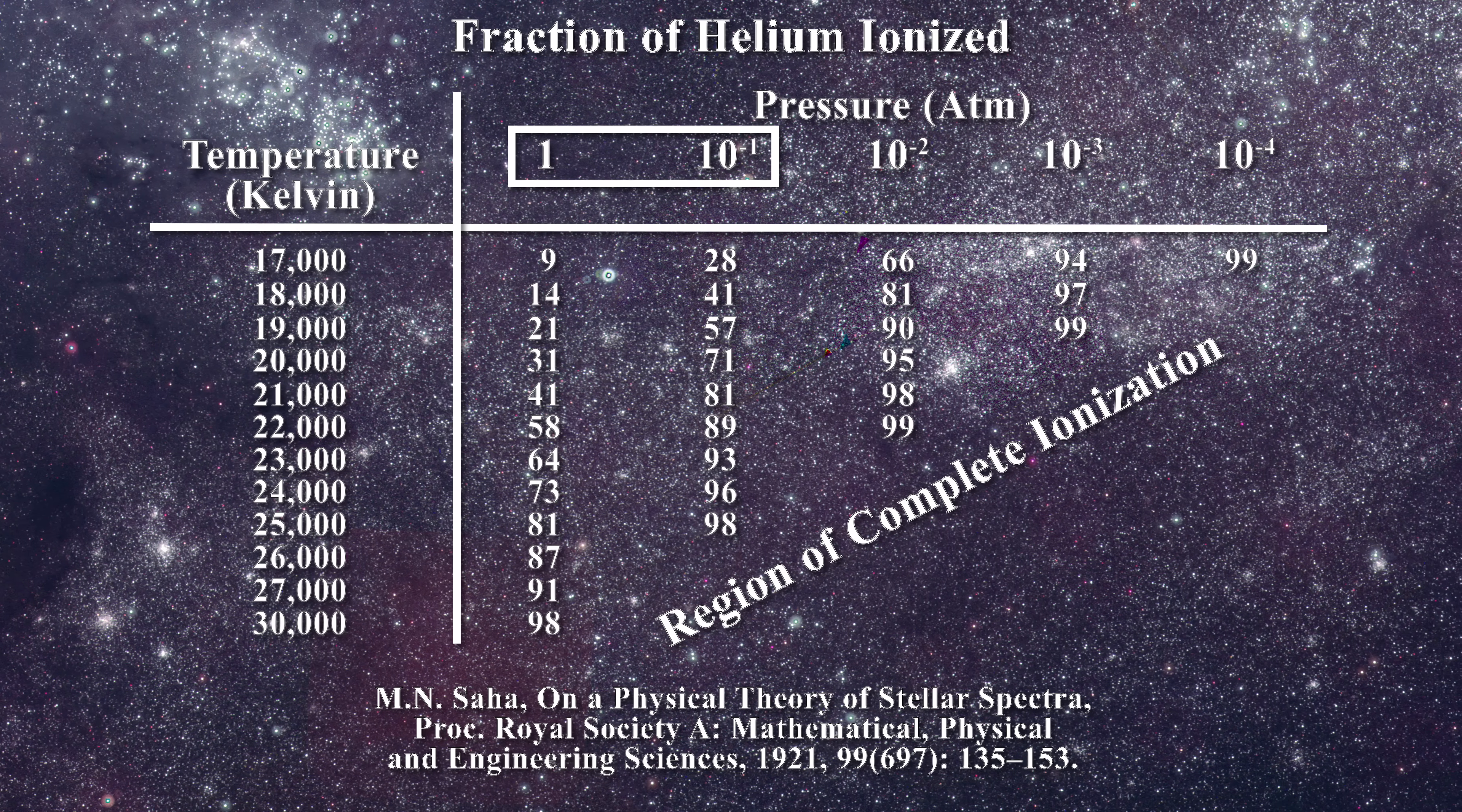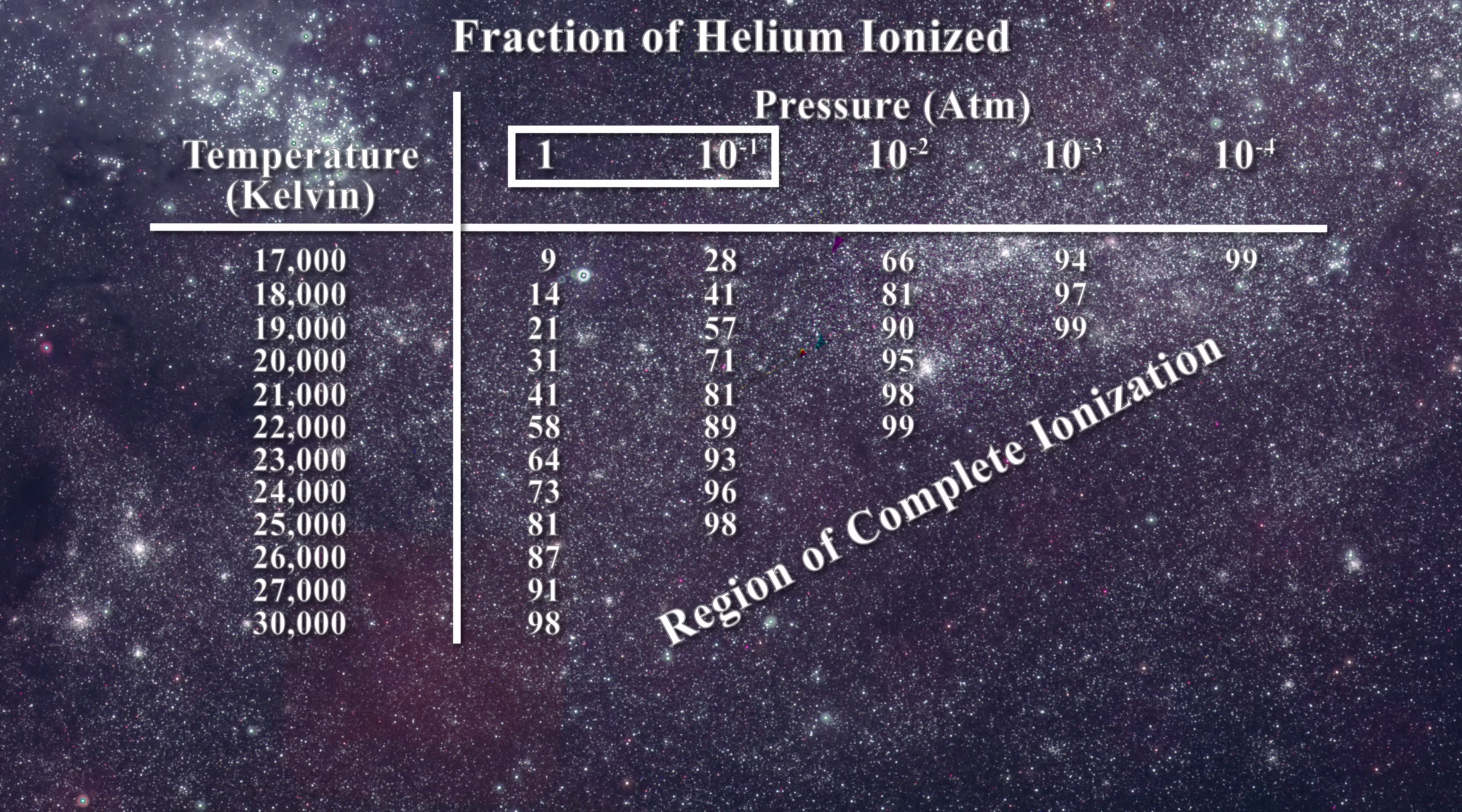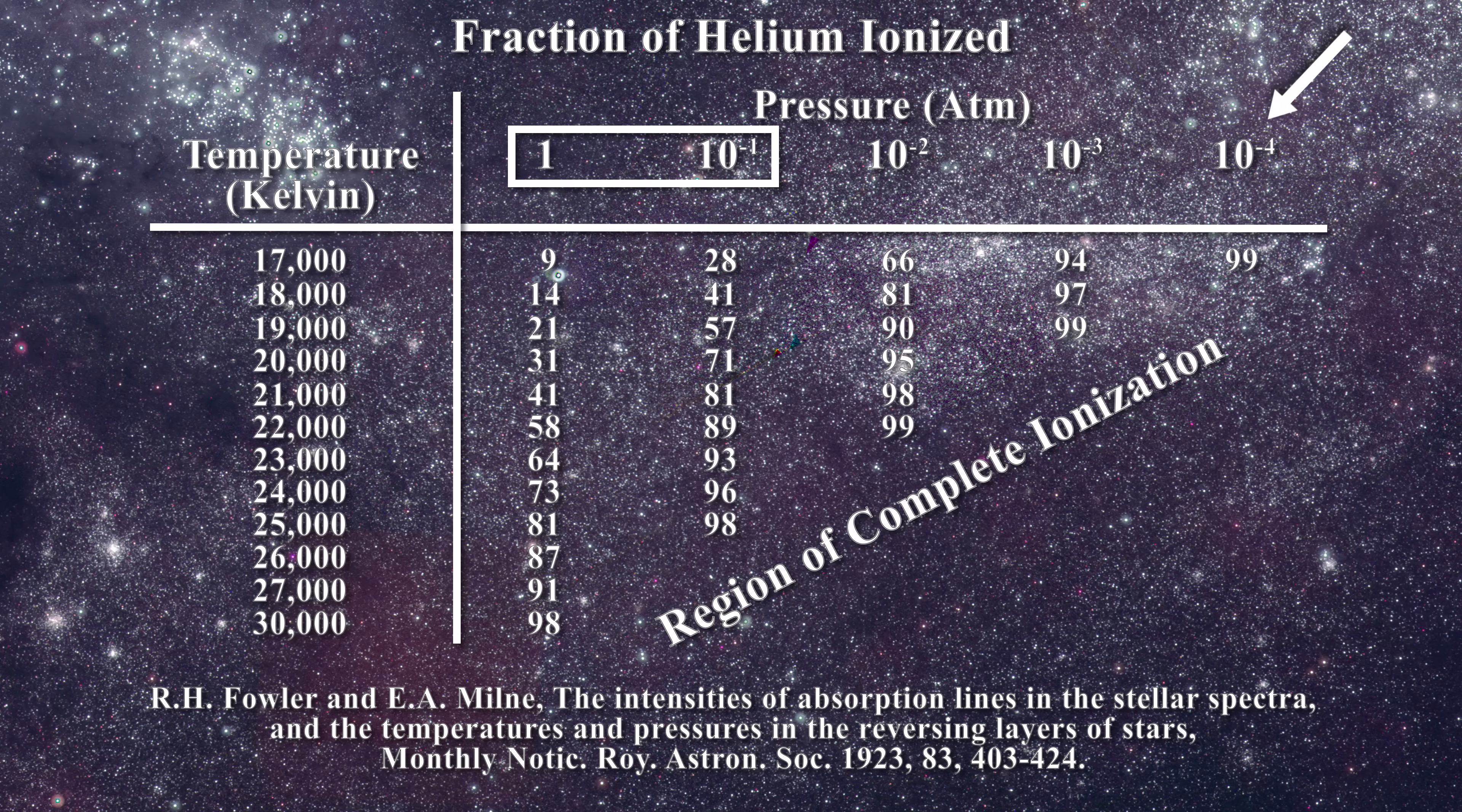This was based on consideration of spectral line widths and shifts. Later these estimates were revised especially when Fowler and Milne re-examined the chromosphere and brought the pressures down to the 10 to the minus 4 atmosphere level as one can learn in this paper.